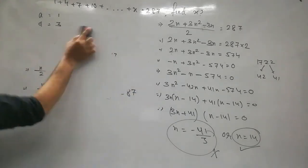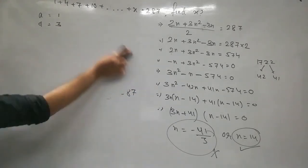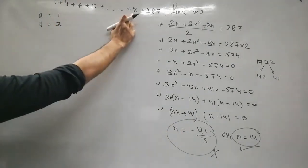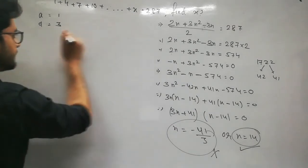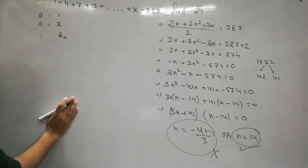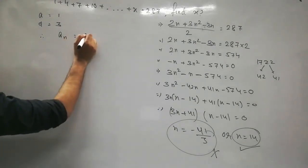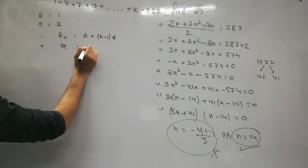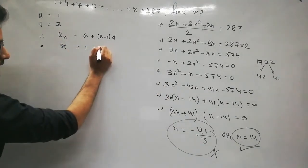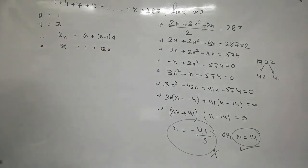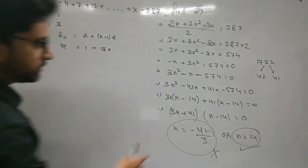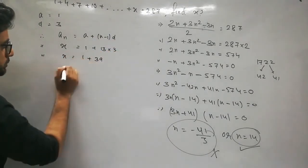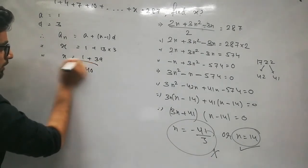Now from n = 14, we find x. Since x is the nth term, use: x = a + (n−1)×d = 1 + (14−1)×3 = 1 + 13×3 = 1 + 39 = 40. So x = 40.